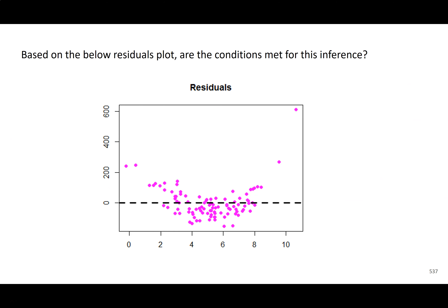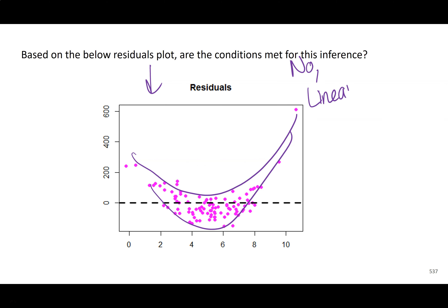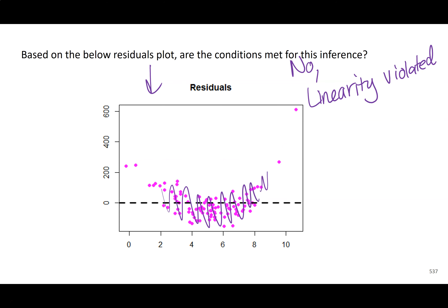Here are a few more residual plots to examine. In one example, you can see a curved shape — this means linearity is violated. You might also argue constant variance is violated since there's more variation on one side than the other. If any condition is violated, you would not want to use the line for inferences about the population — though in an assignment we may still ask you to move forward.